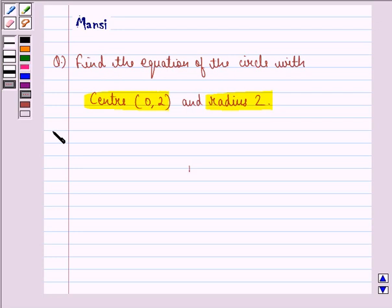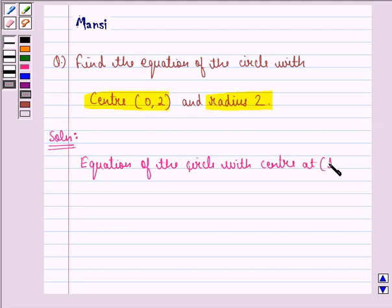So let us start with the solution to this question. First of all we see that equation of the circle with center at a point say (h, k) and radius r is given by (x minus h) the whole square plus (y minus k) the whole square is equal to r square.